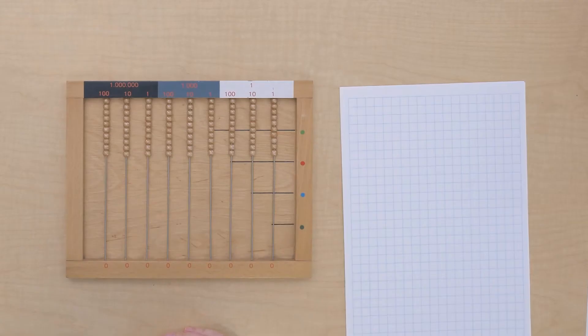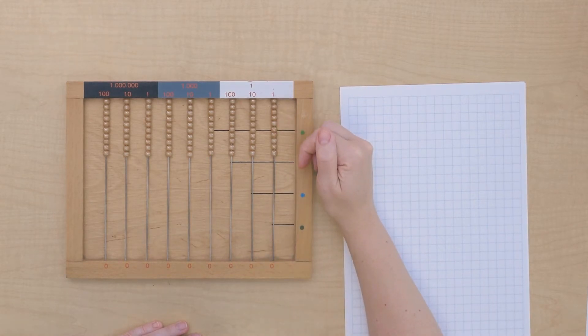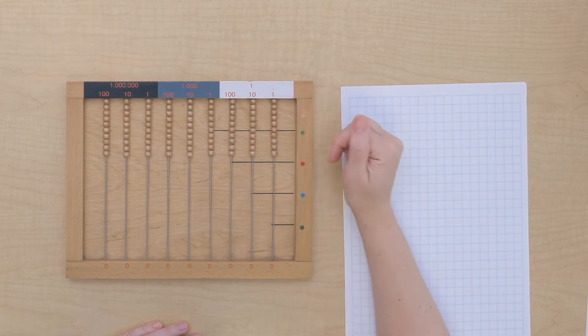This is the flat bead frame, and we use it for long multiplication. Let's take a look and see what we notice. It's kind of like the large bead frame because it has beads on the wires, but these beads are all golden. They're not the colors of the units, tens, and hundreds like on the large bead frame.